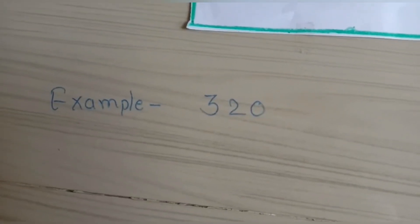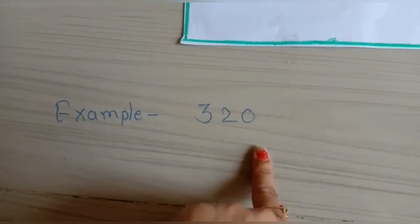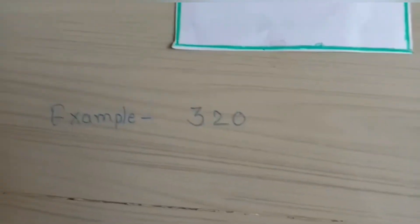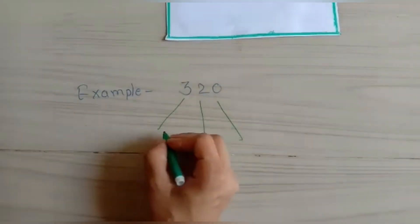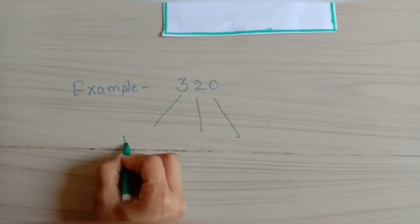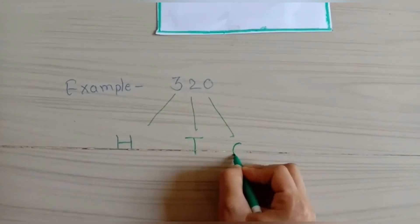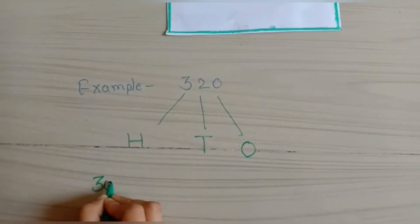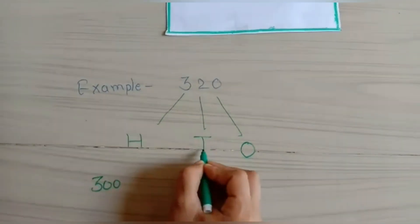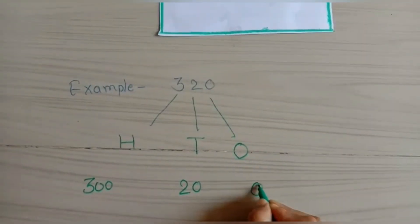Our next example is 320, which means three hundred and twenty. We will put this value in the place value chart: hundreds, tens and ones. This shows three hundred, two tens means twenty, and zero ones means zero.